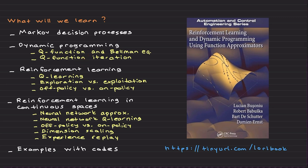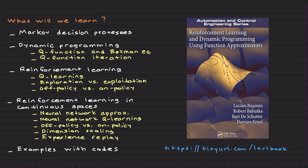We will learn Q-function iteration as part of the dynamic programming section, again assuming the environment is known. Then we address what happens when the environment is unknown — this is exactly where reinforcement learning comes into the picture. We observe what's going on in the environment and correct our actions to improve. The Q-function concept will be replaced with Q-learning, and we will discuss exploration versus exploitation.